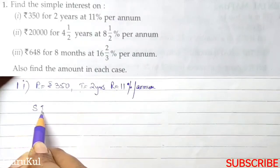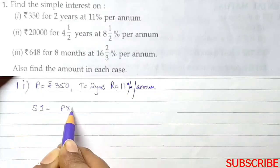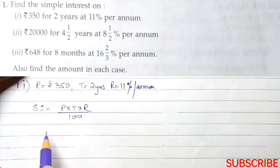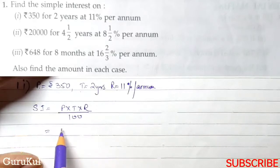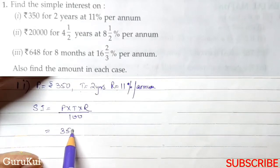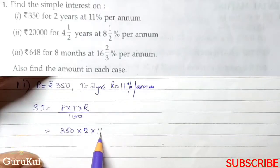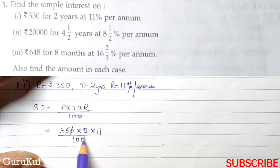So, simple interest ka formula hai P into T into R by 100. That means P is 350, into time is 2, into rate is 11 by 100.